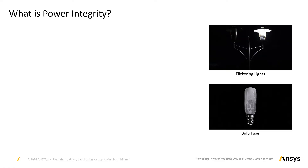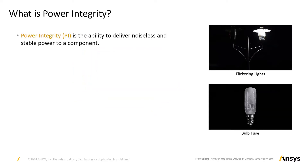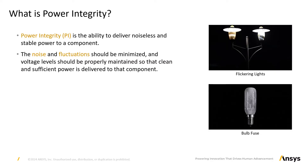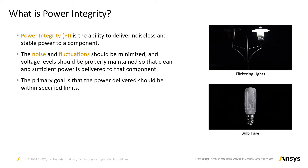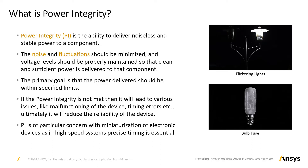These examples illustrate that power should be delivered within specific limits and should be stable with properly maintained voltage levels. This is what we call power integrity — the ability to deliver noiseless and stable power to components. The goal is to minimize noise and fluctuations and properly maintain voltage levels to ensure clean and sufficient power delivery. If power integrity is not achieved, it can lead to device malfunctioning, timing errors, and reduced device reliability.